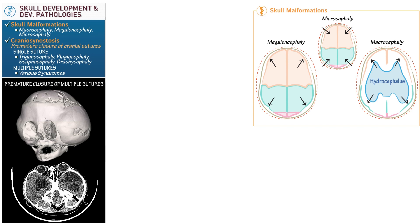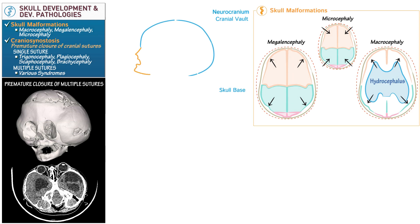Now let's address normal skull anatomy and development in sagittal view. We divide the skull into the neurocranium, which protects the brain. It divides into a cranial vault, which provides a roof for the brain, and a skull base, which provides a floor; and the viscerocranium, which comprises the facial bones.